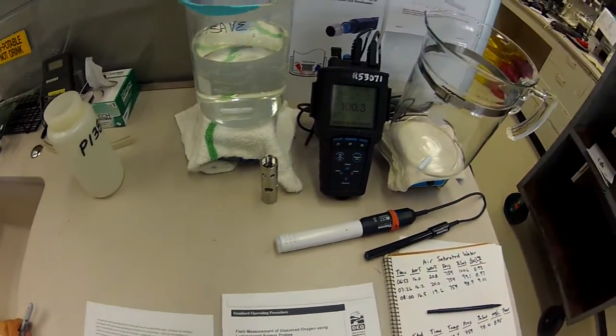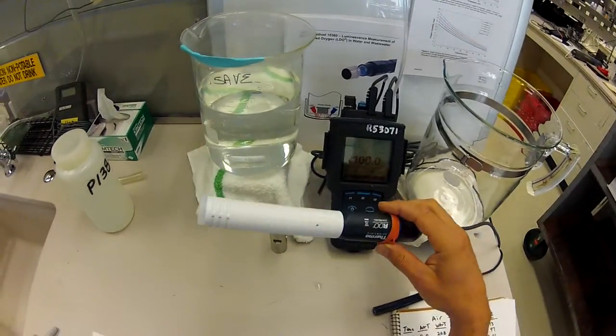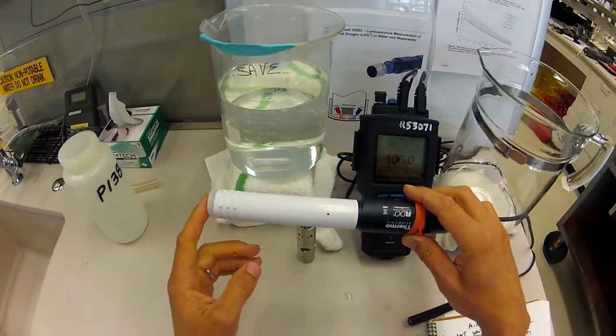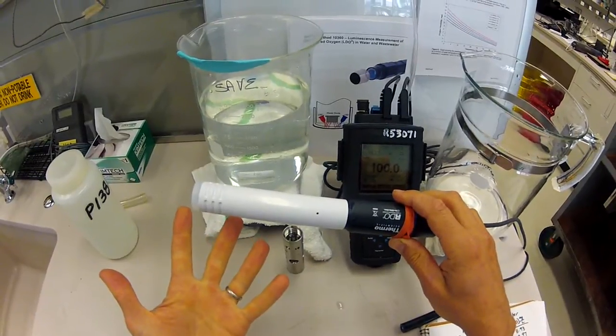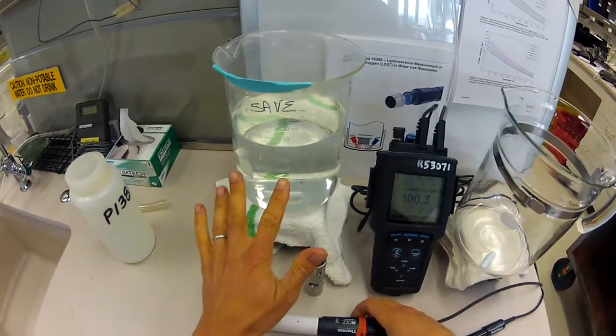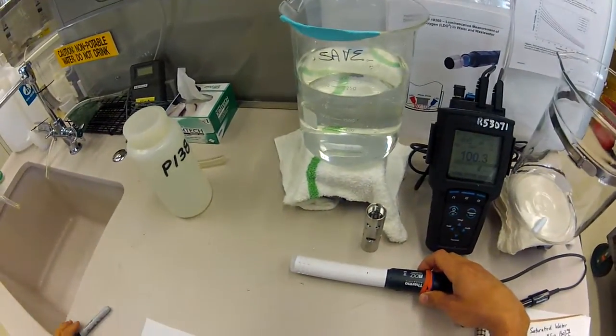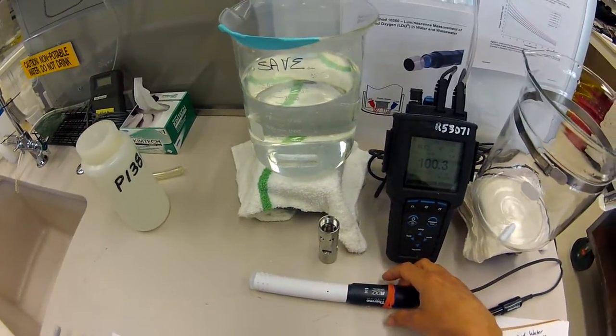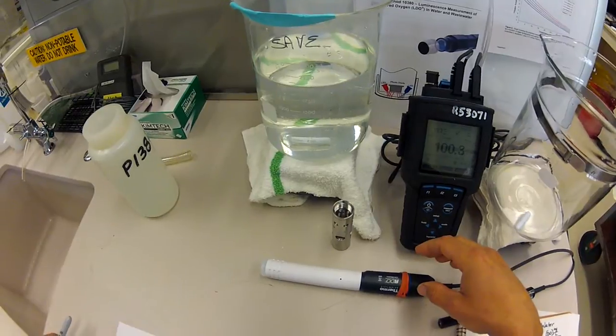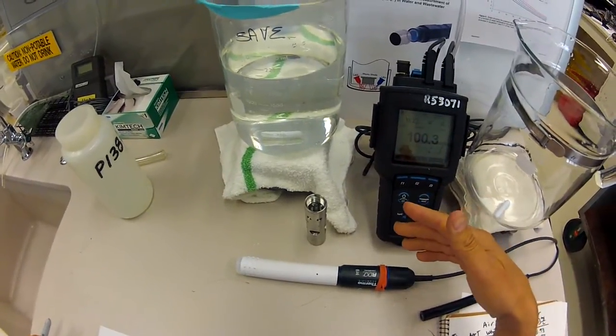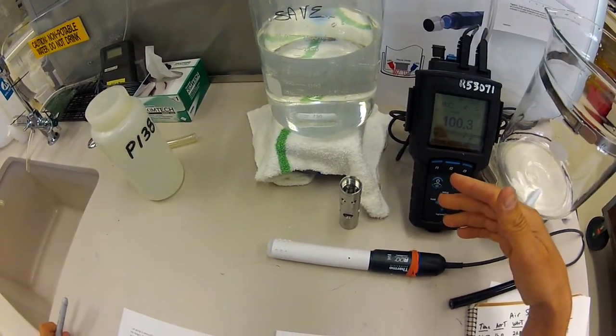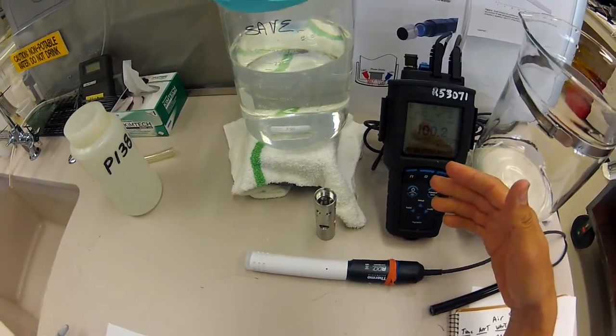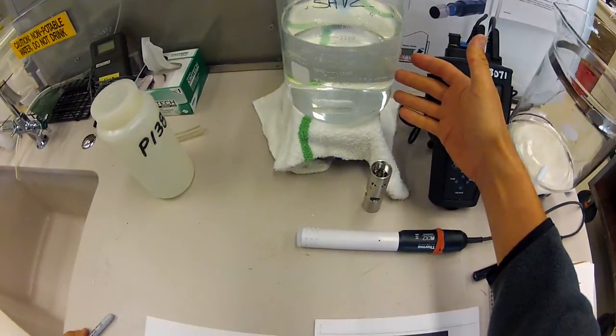Similar to when we did a DO meter calibration where we saturated air with water, we're now just going to flip that and take water and saturate it with air. We're going to need stable temperature and barometric pressure conditions in order to reach equilibrium between the air and the water.